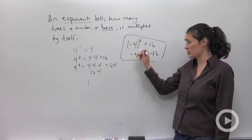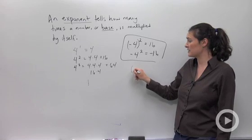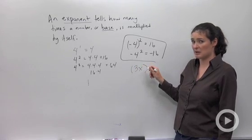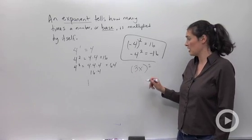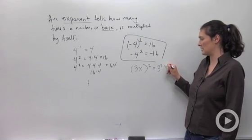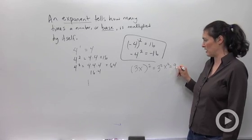One other thing I want to show you that's similar to this is the difference between 3x in parentheses squared, in which case 3x is the base. So when I square it, I'll have 3 squared times x squared, or 9x squared.